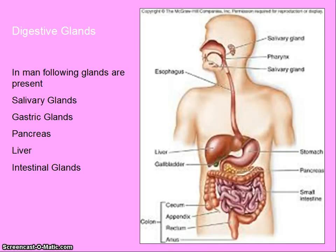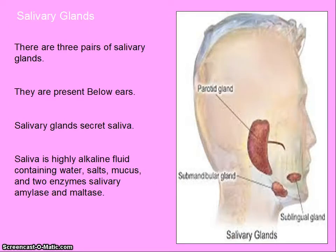Digestive glands: in man, the following glands are present — salivary glands, gastric glands, pancreas, liver, and intestinal glands. Salivary glands: there are three pairs of salivary glands, present below the ears. Salivary glands secrete saliva. Saliva is a highly alkaline fluid containing water, salts, mucus, and two enzymes called salivary amylase and maltase.